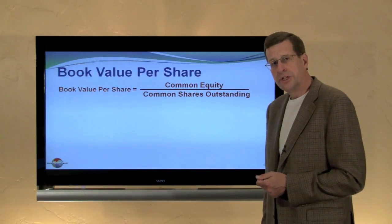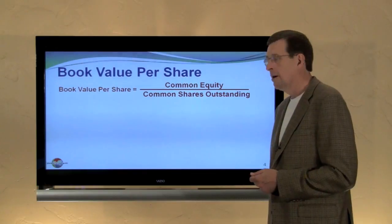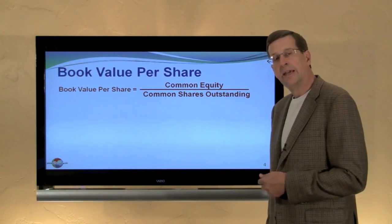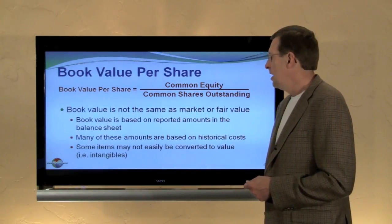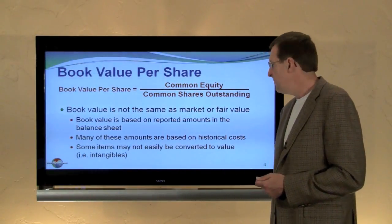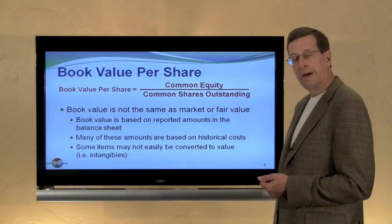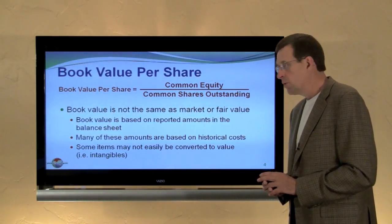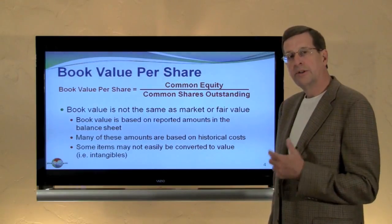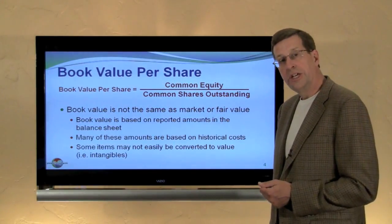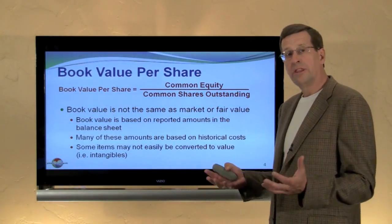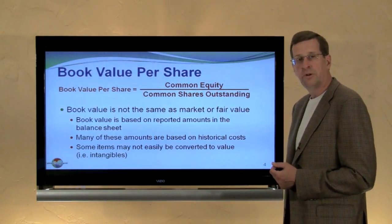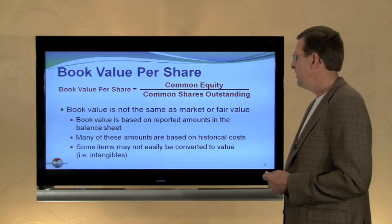Another ratio to consider is the book value per share, which is the common equity divided by the common shares outstanding at the balance sheet date. Book value is not the same as market value or fair value — it is based upon amounts reported in the balance sheet. Many assets may be carried at historical cost, and certain things may not appear on the balance sheet at all, or may not be readily convertible to value, such as certain intangibles like a brand name.